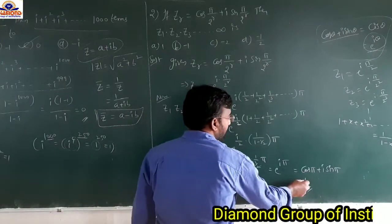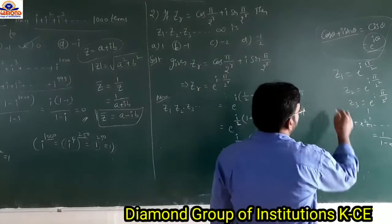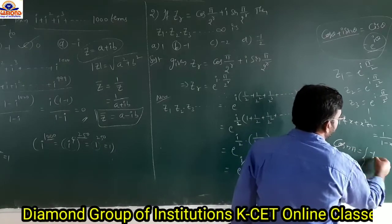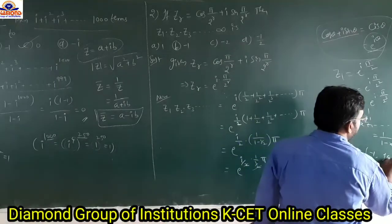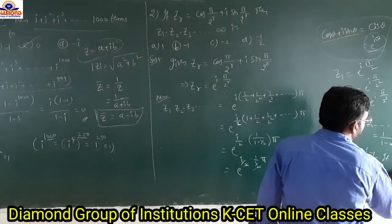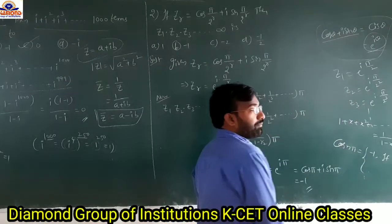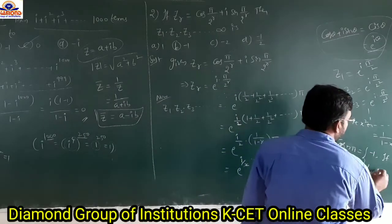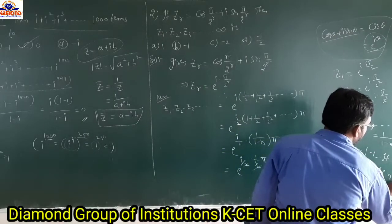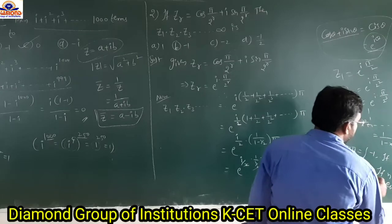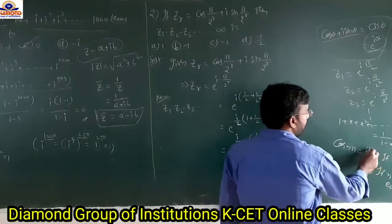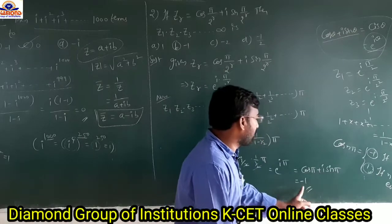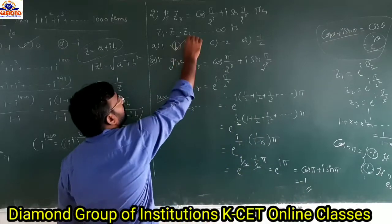So cos φ equals minus 1. Generally, cos(nφ) equals minus 1 if n is an odd number, and equals 1 if n is an even number. So the answer is cos φ plus i·sin φ equals minus 1. So option is b.